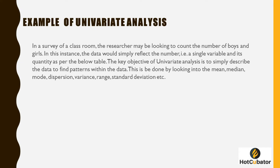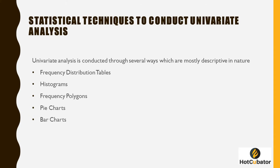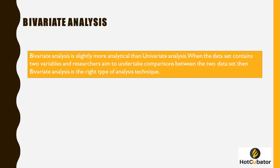The key objective of univariate analysis is to simply describe the data and find patterns within it. You can do this using mean, median, mode, dispersion, and variance. Common univariate analysis techniques include frequency distribution tables, frequency polygons, histograms, pie charts, and bar charts.